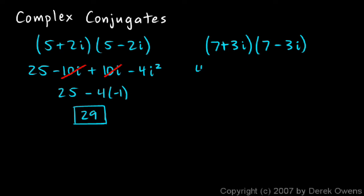We have 49, and then I have 7 times minus 3i. That gives me minus 21i. And then for my inner terms I have 3i times 7, that's plus 21i. And then I have 3i times negative 3i. That gives me negative 9i squared.